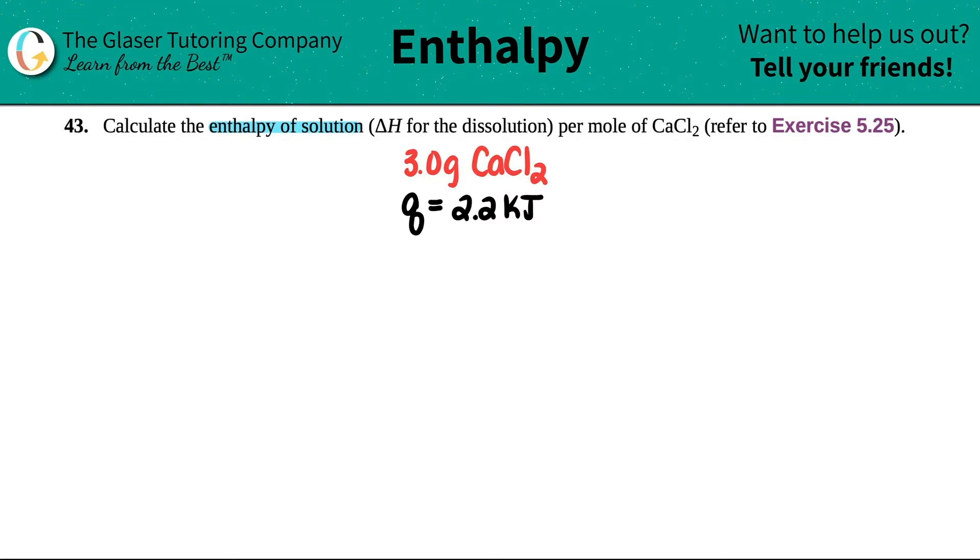So now we have to say to ourselves, okay, we want to calculate the enthalpy. What is enthalpy? Enthalpy is delta H. I kind of make the connection between enthalpy and delta H because of the H in enthalpy. There's going to be something called entropy coming up in probably the next couple of chapters. So a lot of students get confused between enthalpy and entropy.